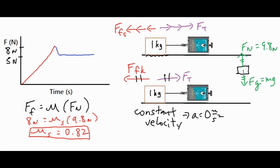The same process applies for the coefficient of kinetic friction. Since kinetic friction can only push back with 5 newtons, we have 5 newtons equal to mu sub k times 9.8 newtons. Dividing both sides by 9.8 gives the coefficient of kinetic friction.